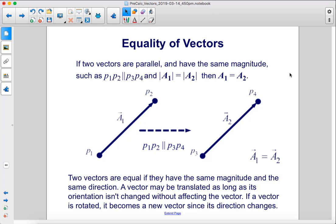If two vectors are parallel and have the same magnitude, such as P1P2 is parallel to P3P4, and the absolute value of A1 equals the absolute value of A2, then A1 equals A2. Two vectors are equal if they have the same magnitude and the same direction.